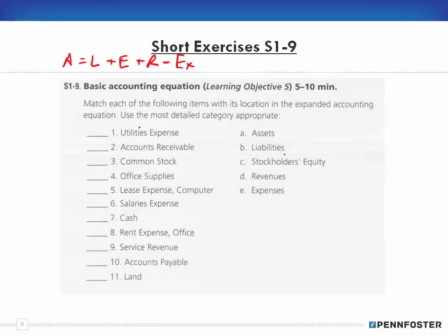For utility expense — whenever you have an expense, regardless of what it is, you put the word 'expense' after it. Whether it's payroll expense or rent expense, if money is flowing out of the business for its operation, it falls in the expense category. So utility expense would be E — expenses. Accounts receivable is something you own; people owe you money, so it's an asset — category A.